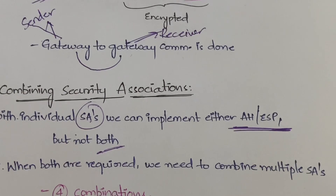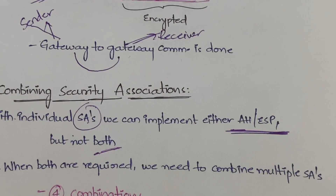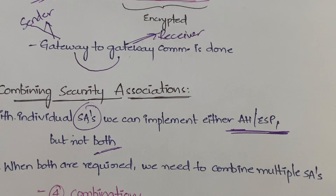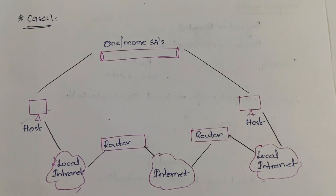In this we have four different kinds of combinations, or you can say four different cases. Each of them will be very small — not like PGP — very simple. I will explain about them now.